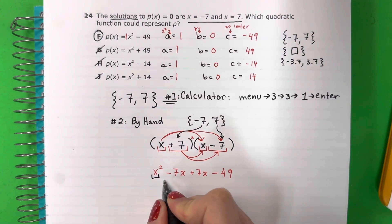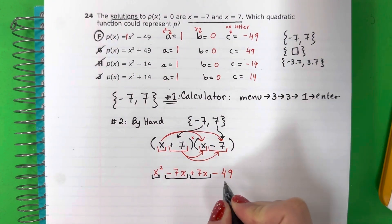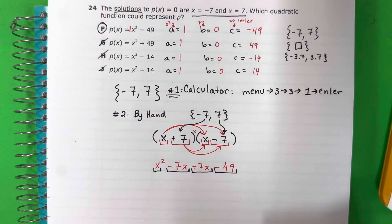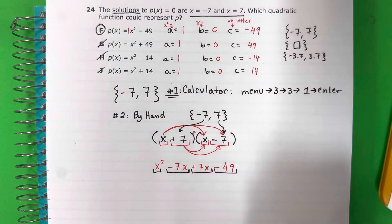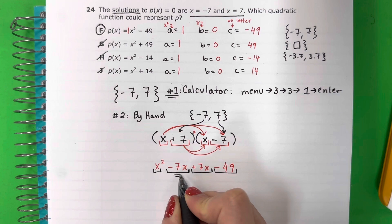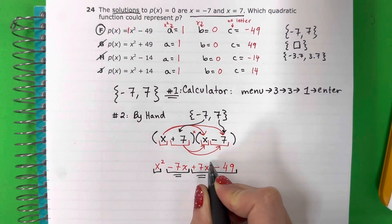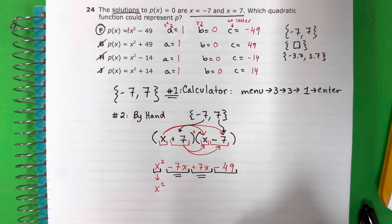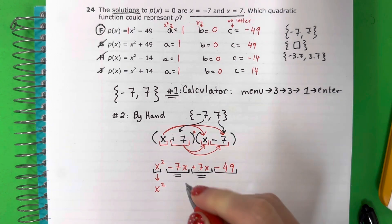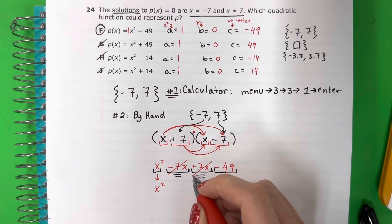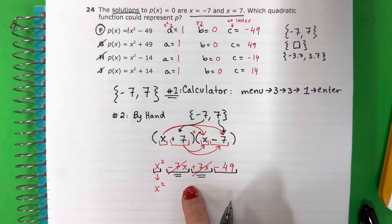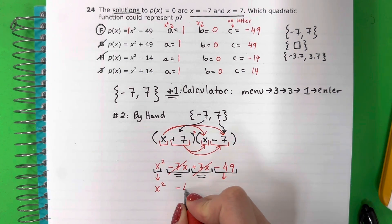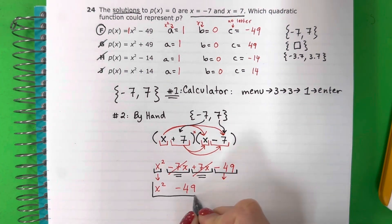Now I have four parts. Combine like terms, los términos que son similares. X sin exponente. Copy X squared. -7X plus 7X, negativo 7 más 7, that's 0. Cancel. Don't put anything. 0 is nothing. No X even. Copy -49. This is your answer: x² - 49.